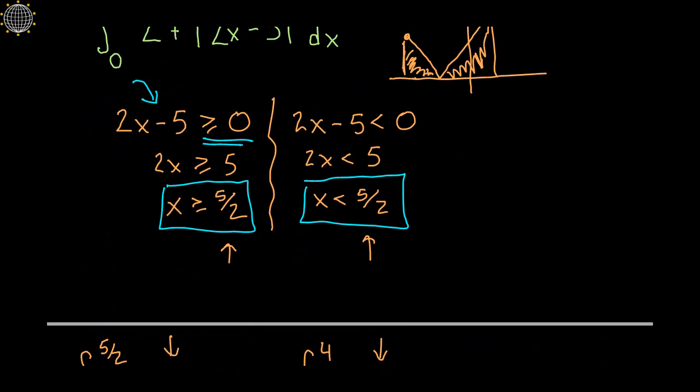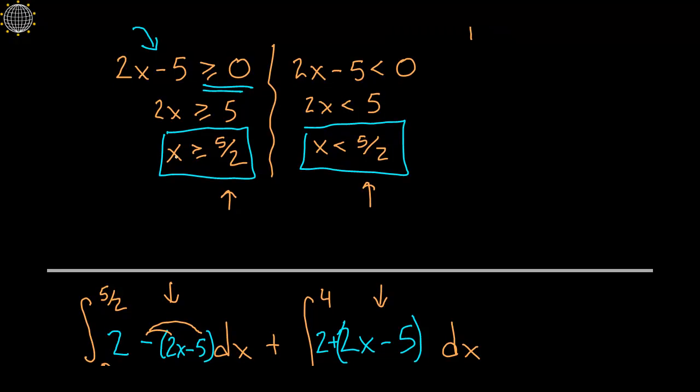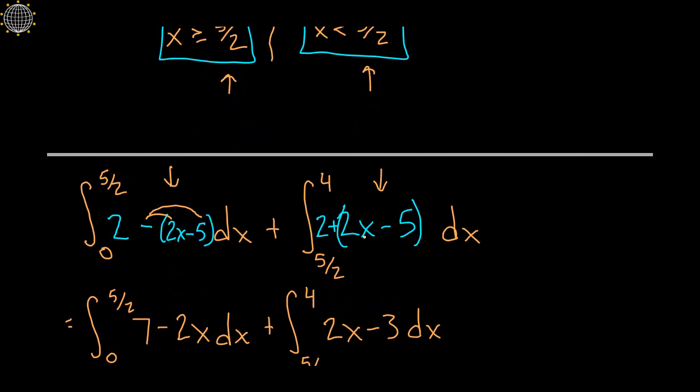The way I did it was much safer, because we know that for the x's past 5 halves, the quantity was positive, and so you would just leave the integrand what it originally was without absolute values.